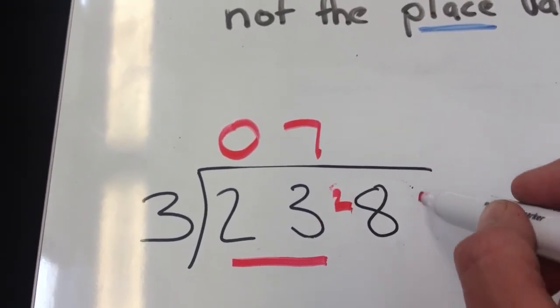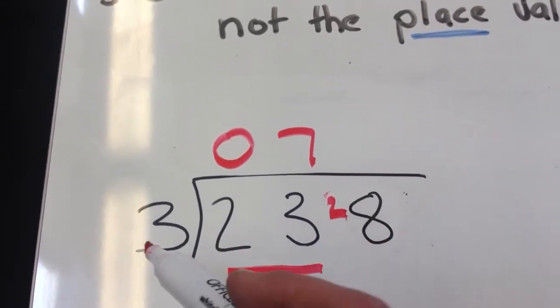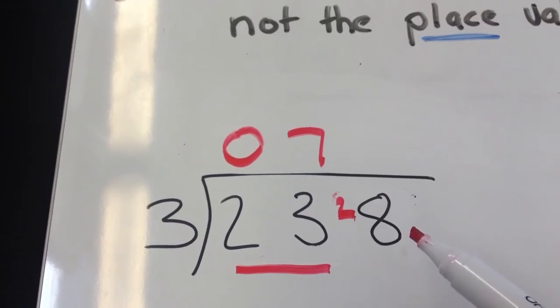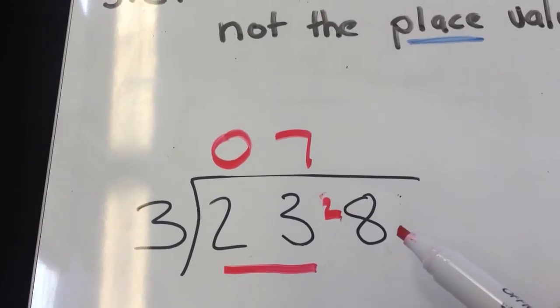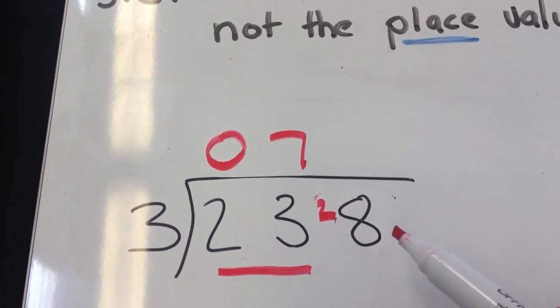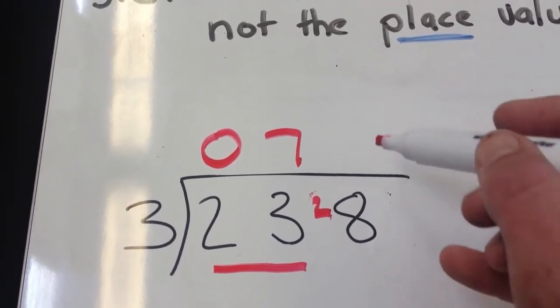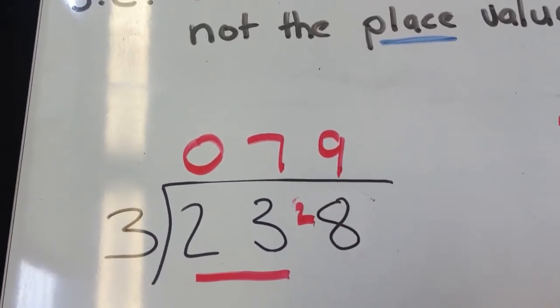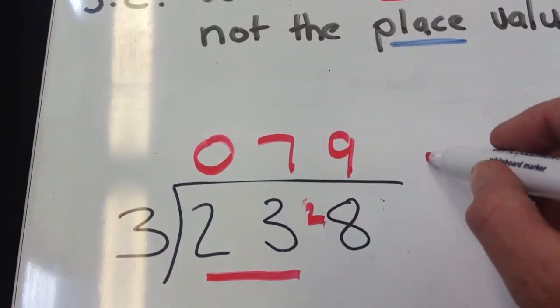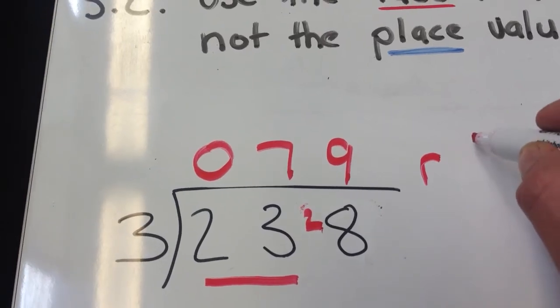Now we treat that as 28. How many times does 3 go into 28? Well, we just said before that 8 threes were 24, 9 threes are 27. So 9 threes are 27, I'm going to put 9 there. But now I've got 1 left over, so I write remainder, or R1.